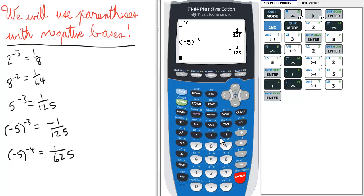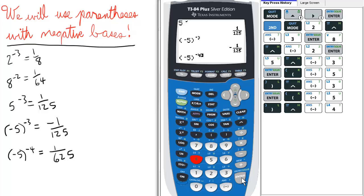Let's try this one. Negative 5 raised to the negative 4. So, open parentheses, negative 5, close parentheses, raise to the negative 4. Ooh, positive answer.